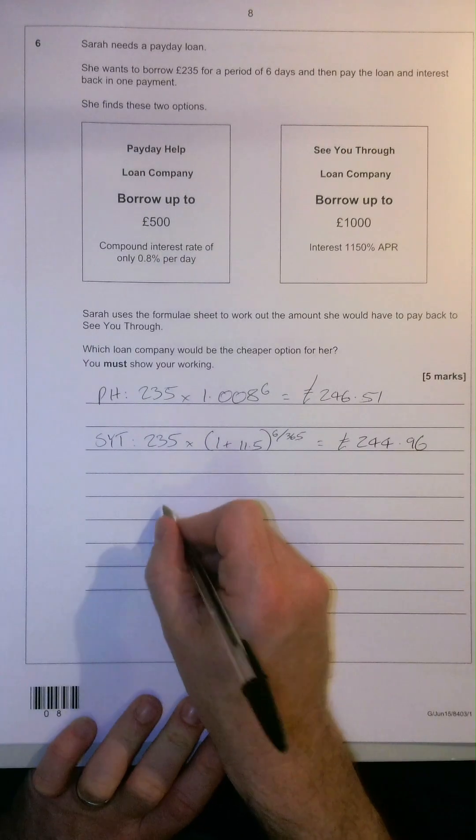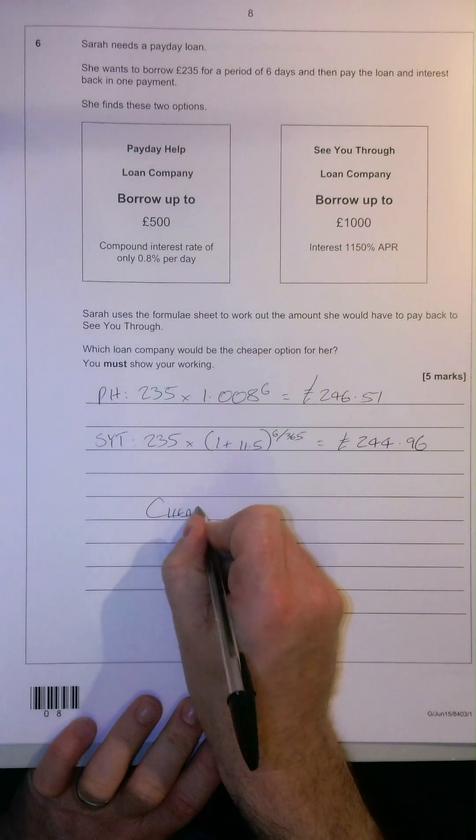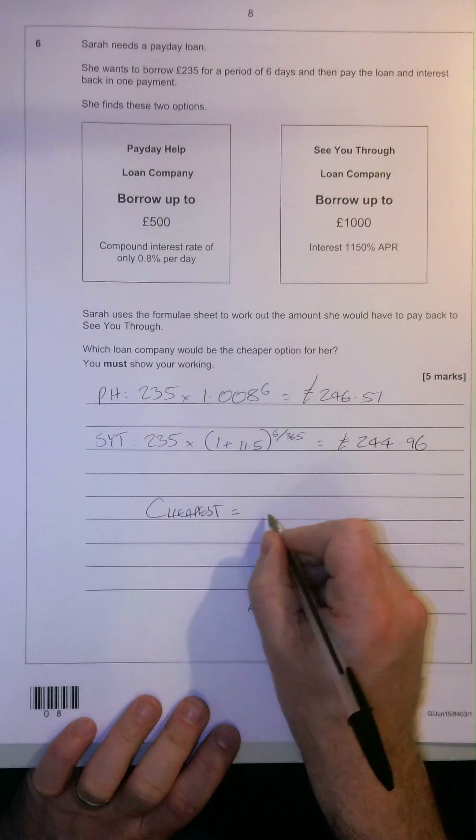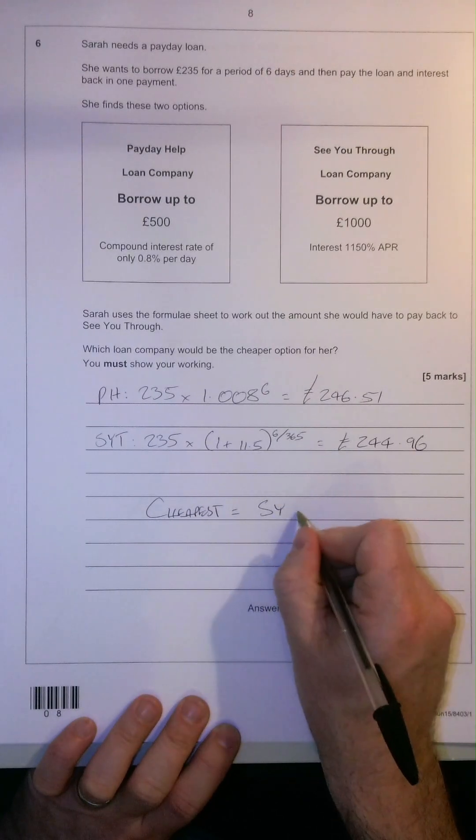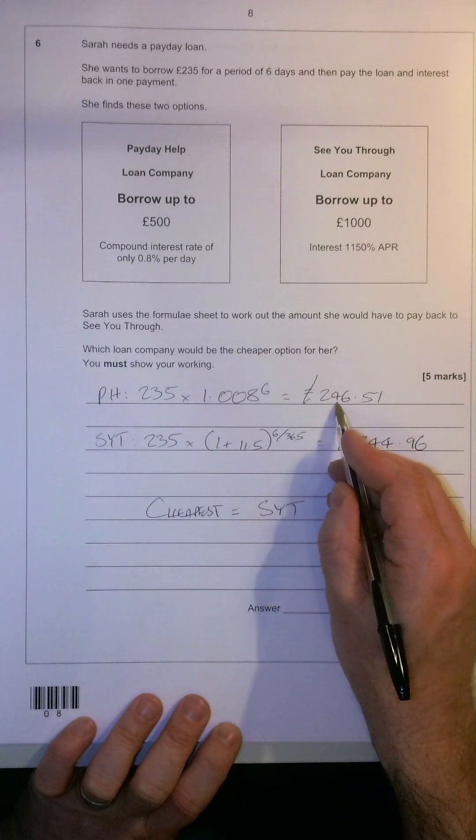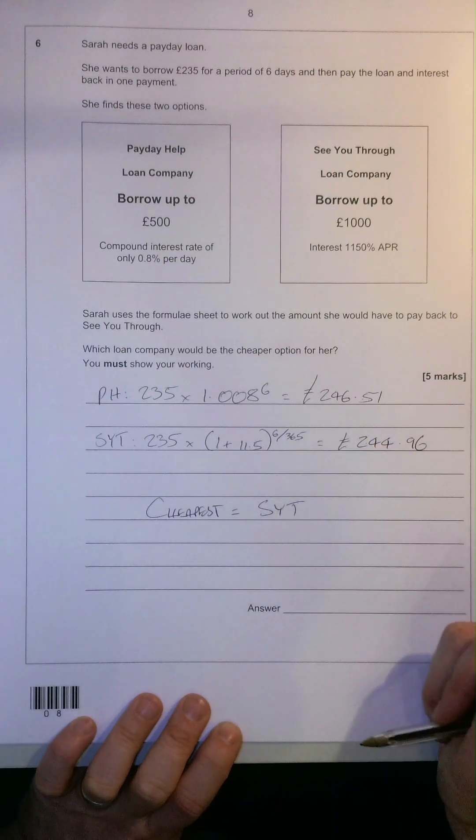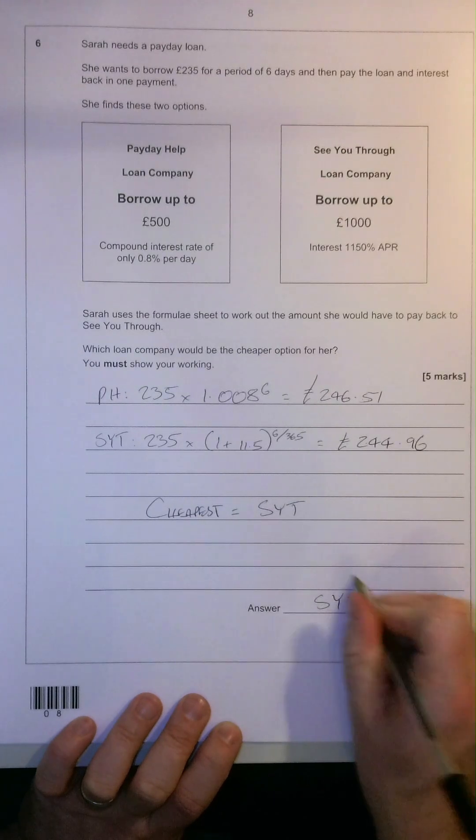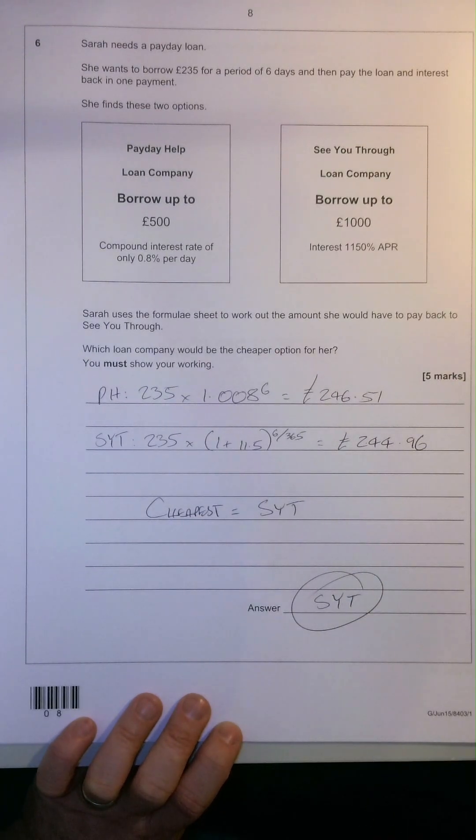So therefore, the cheapest option out of the two would, of course, be see you through. 244.96 being cheaper than 246.51. Also, see you through. Five marks in the bag.